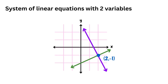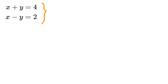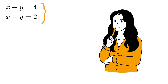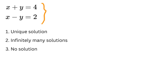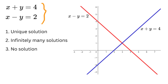Before we start solving, let's understand what can happen with any system of linear equations. Consider a system with two variables x and y. Suppose the two equations are x + y = 4 and x − y = 2. These two equations represent two straight lines that intersect at one point, so there is only one pair of x and y that works — this is called a unique solution.